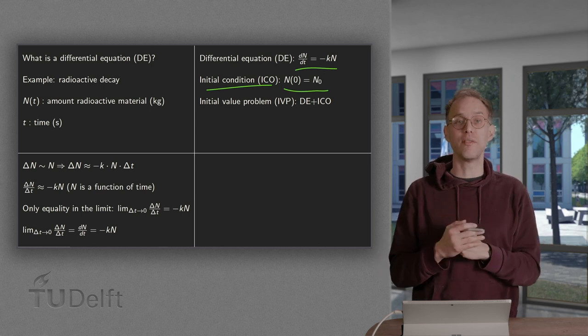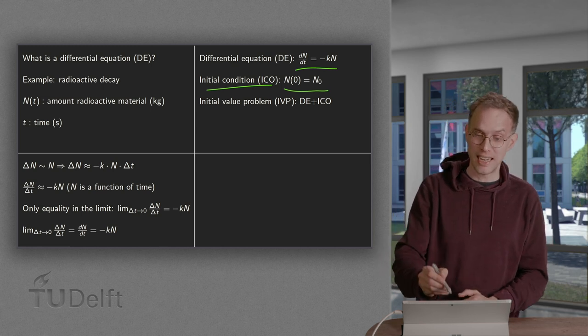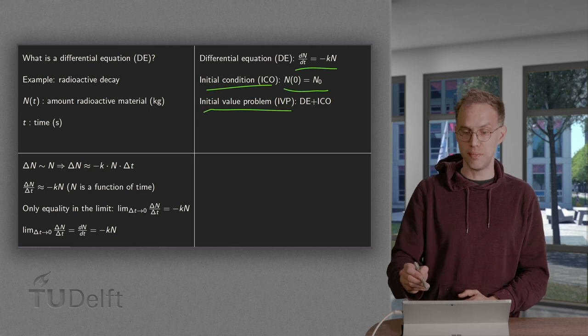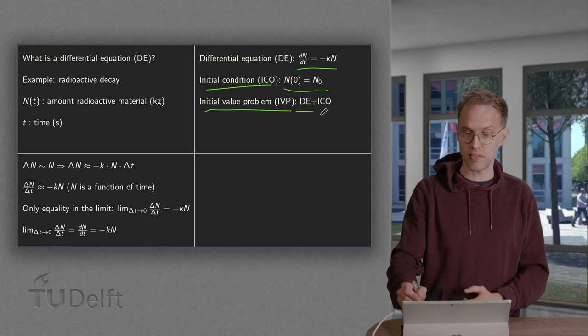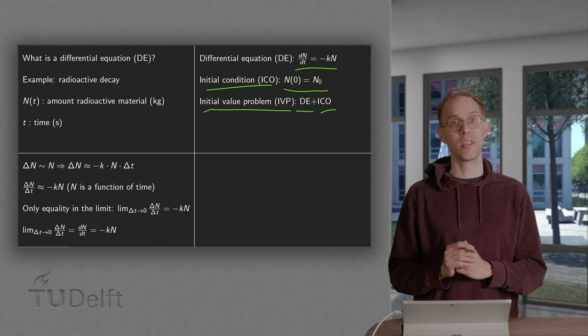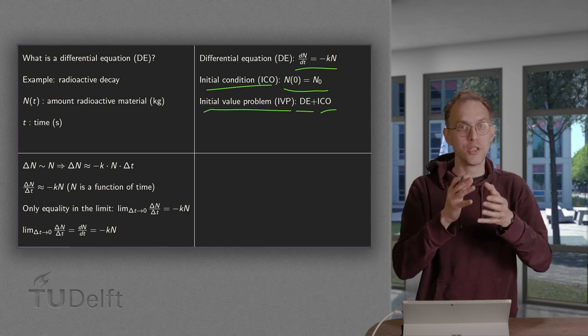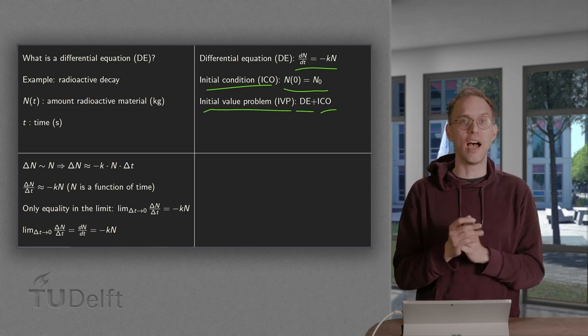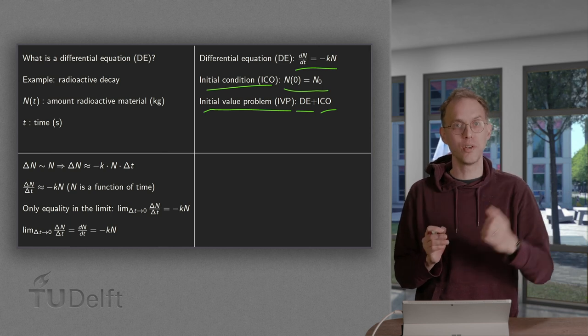And if you have both of them, if you combine this, that's what's called an initial value problem, IVP. That's a differential equation supplemented with an initial condition. Now, this was a very specific notation for the case you had radioactive quantity. That's why we use capital N.